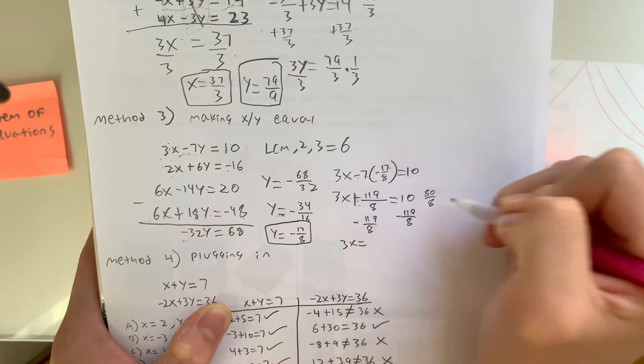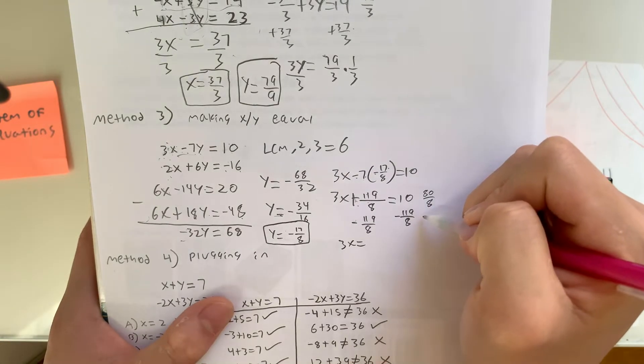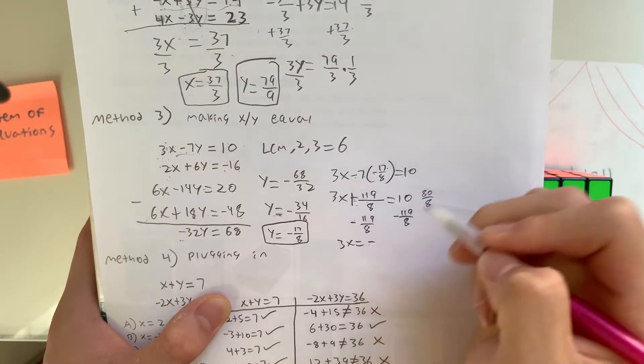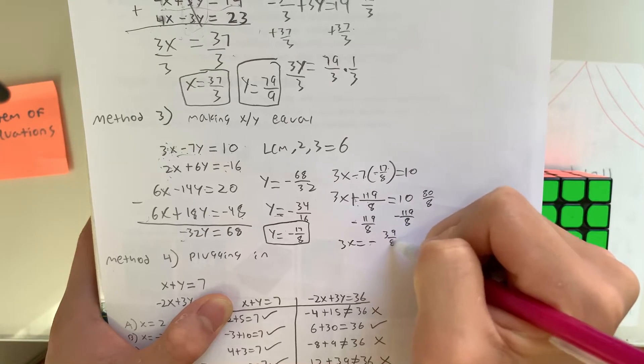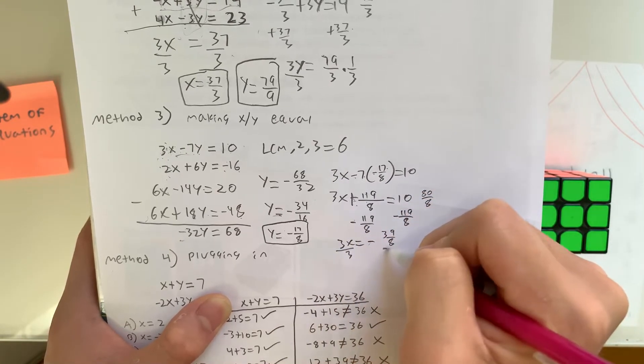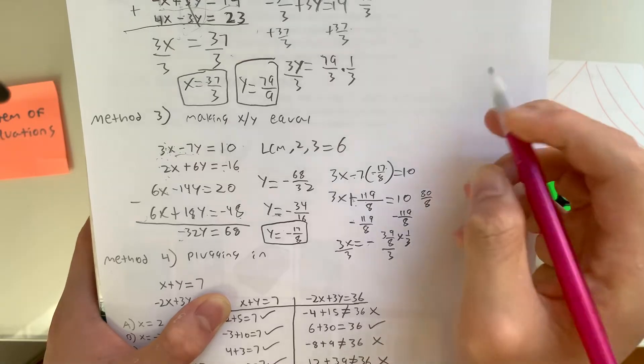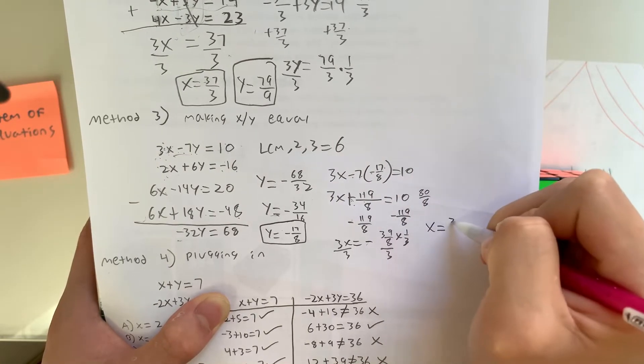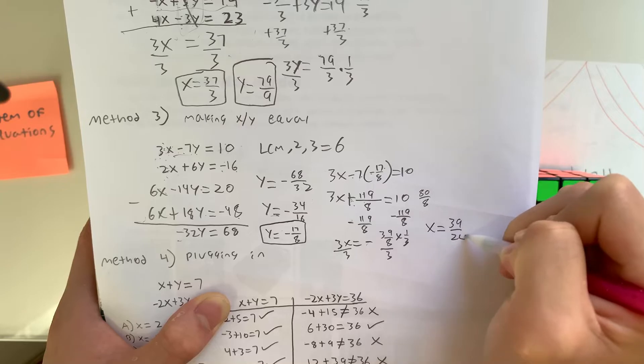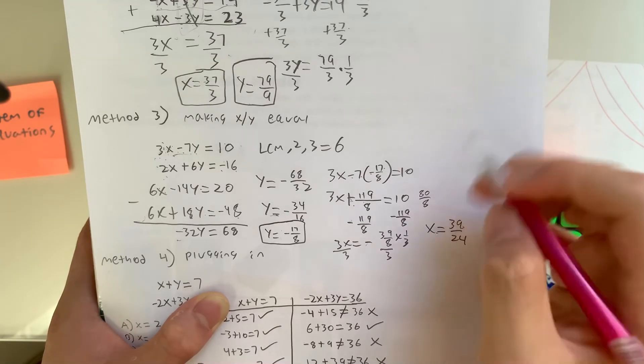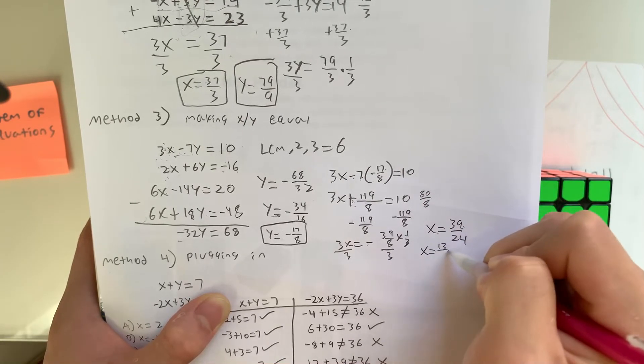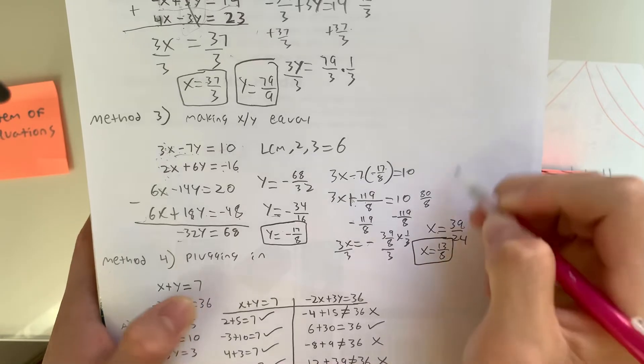3x equals, what's that equal to? That's 80 over 8. We subtract, that equals negative 39 over 8. Now we could divide both sides by 3, multiply by 1 third. So that gives us x equals negative 39 over 24. Divide both sides by 3, x equals negative 13 over 8. So those are our two solutions.